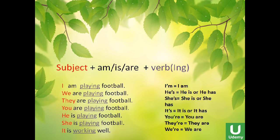So, the present continuous consists of a subject, which is I, we, you, they, he, she, it. But here it's a little bit different. Why? Because we use am, is, are after the subject, and the verb is also different because it ends in -ing.